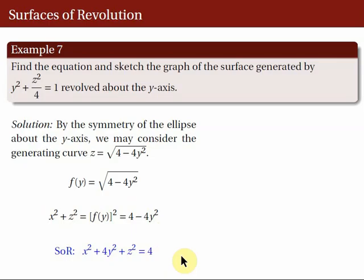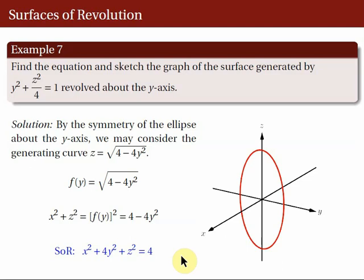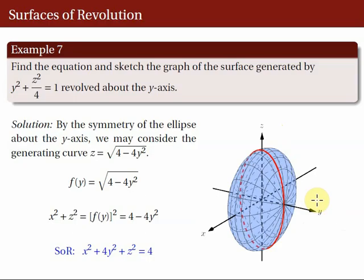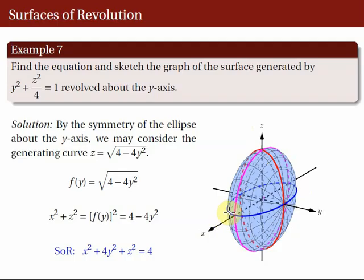We sketch the graph by first drawing the ellipse on the YZ coordinate plane, then revolving the red curve about the Y-axis to obtain the surface of revolution. The blue curve is the trace of the surface on the XY plane, and the magenta curve is the trace on the XZ coordinate plane. Revolving the blue curve about the Y-axis yields the same SOR.